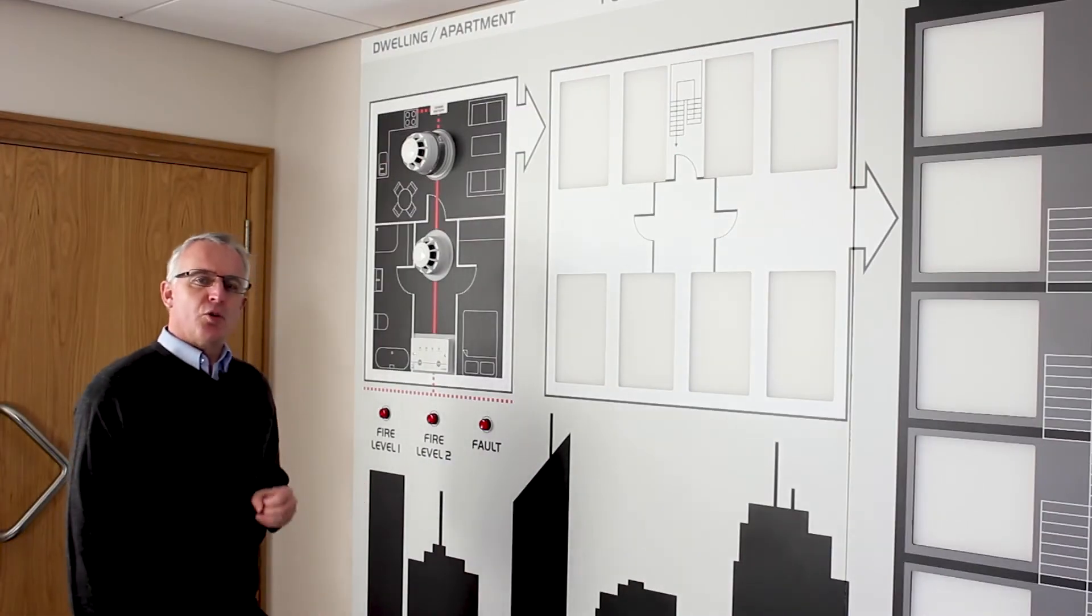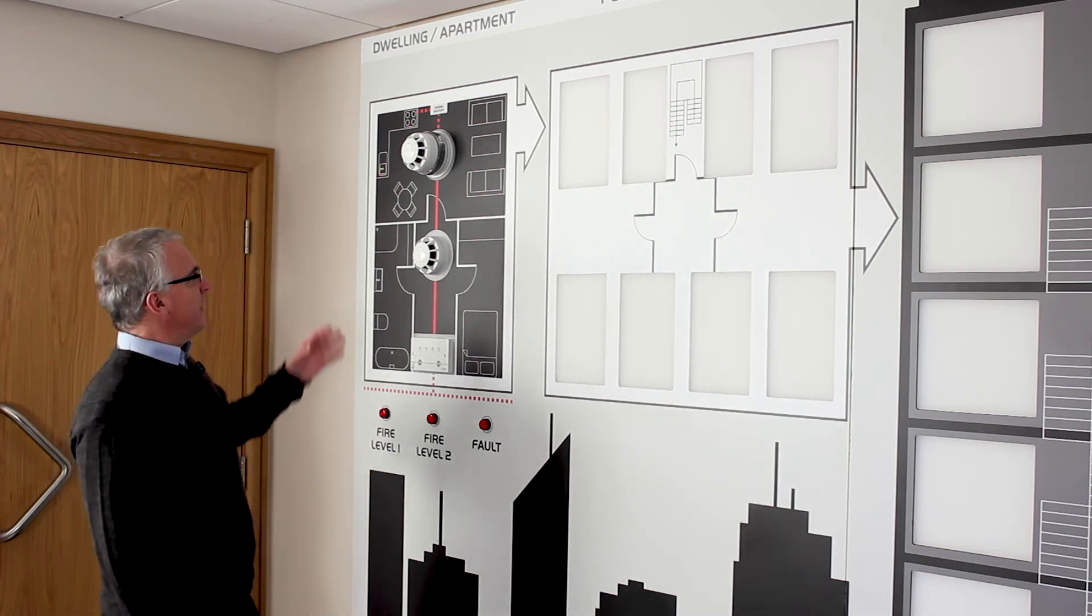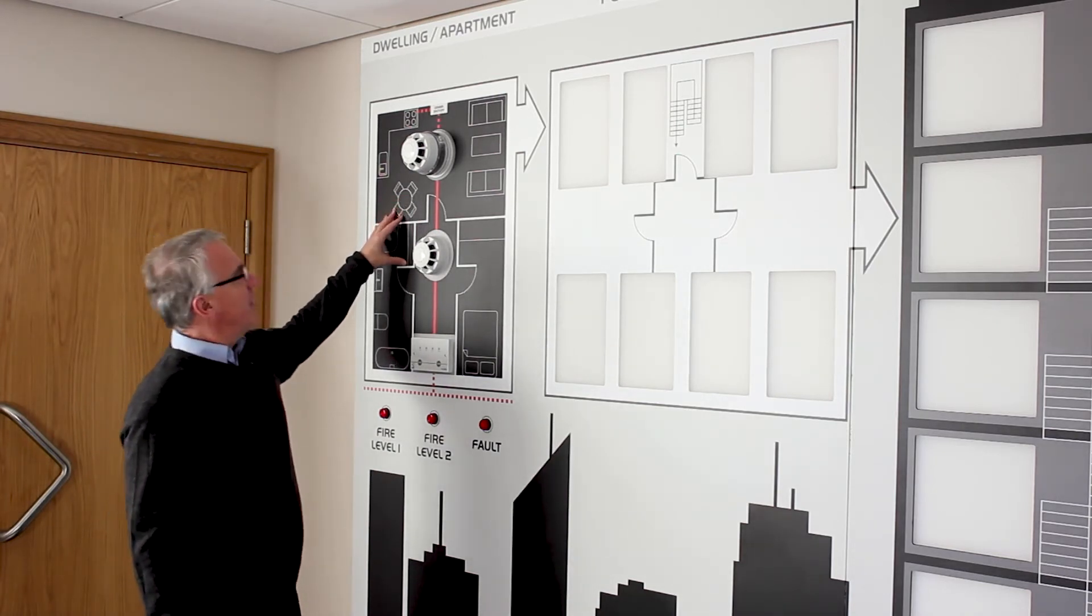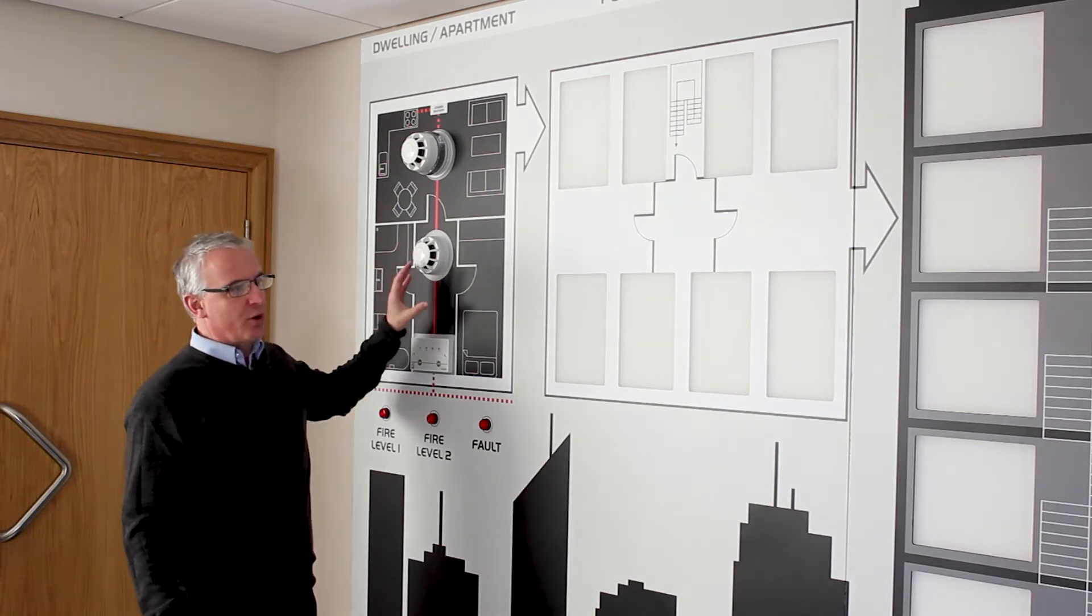With Hush Pro we've also got the Fire Level 2 scenario. So as I explained before, that is potentially Fire Level 1 has been in situation for a while. The fire has spread and maybe the heat element of the multi-sensor has then triggered.